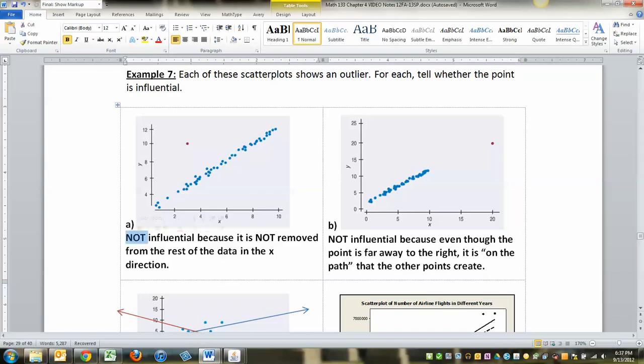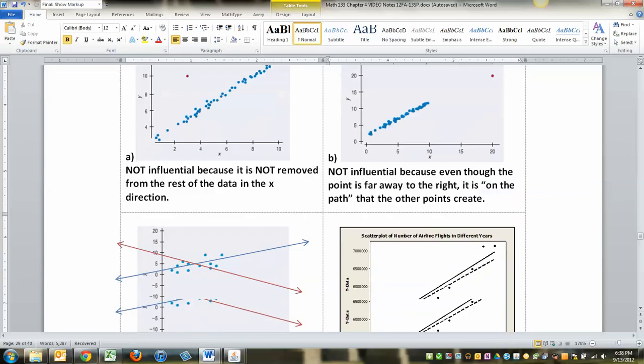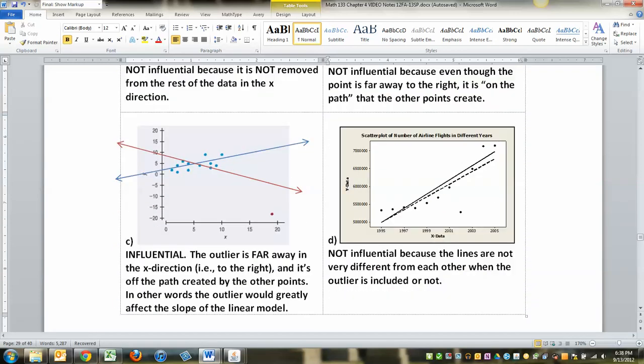So let's look at a for a second. A is not influential. The reason being because it's not far away in the x direction. You have to see kind of a big gap over here on the left or a big gap on the right for it to even be considered influential. And this is not influential. He's above for sure, but he's not far away to the left or right. All right, letter B is not influential because even though he's far away to the right, see that big gap in there? He's on the path the other dots make. So that's no good to us. That's not influential.